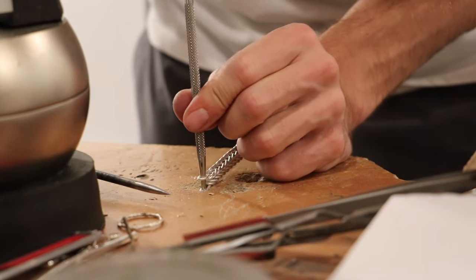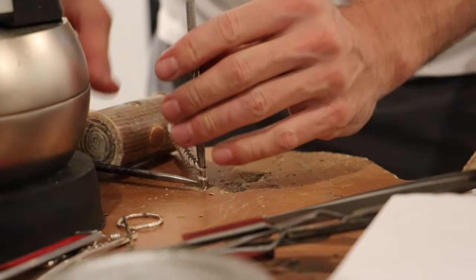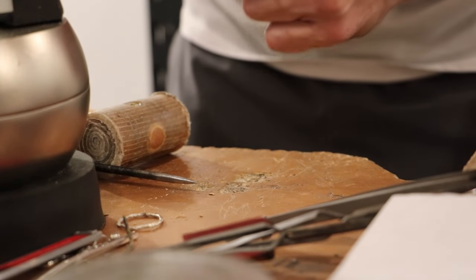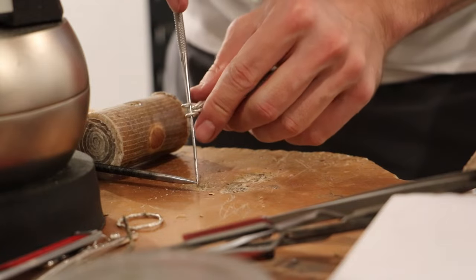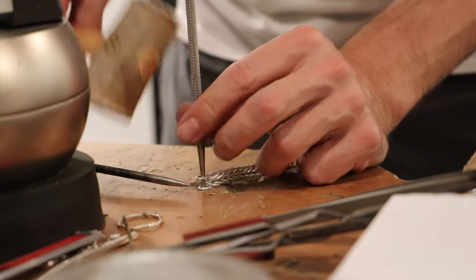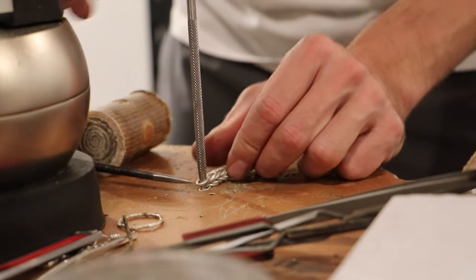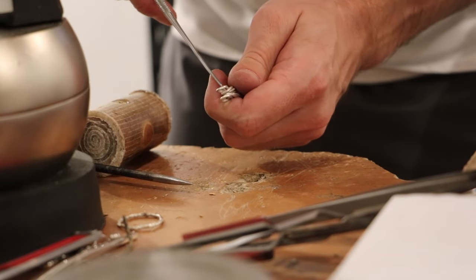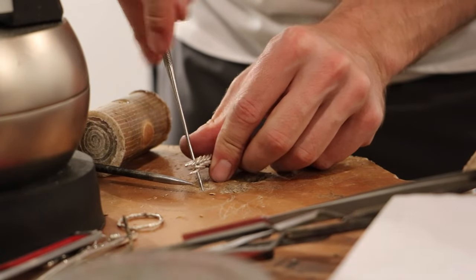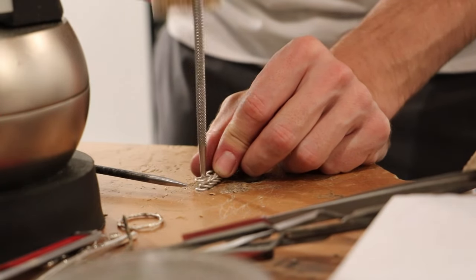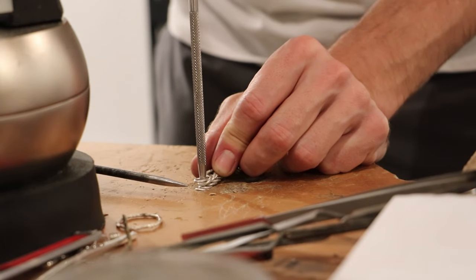Tools are your next big thing. A jeweler's saw for cutting, pliers, round nose and flat nose are essentials, and a file for smoothing out edges are basics that every crafter needs. Don't forget about a soldering iron for joining pieces together and a polishing cloth to give your bracelet that final shine.